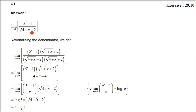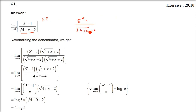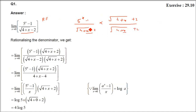Question 1: under root 5 to the power x minus 1 divided by under root 4 plus x minus 2. Wherever this form comes, we will multiply by the rationalization factor (RF). So let us multiply numerator and denominator by under root 4 plus x plus 2. In the denominator you have (a+b)(a-b) = a² - b², so it becomes 4 plus x minus 4.